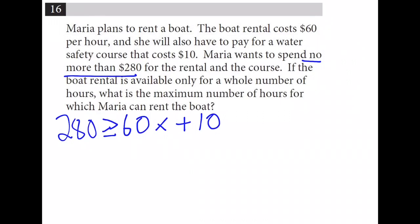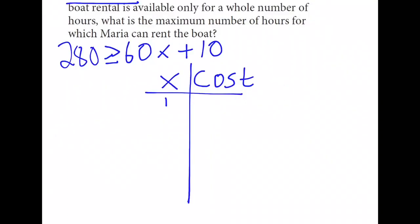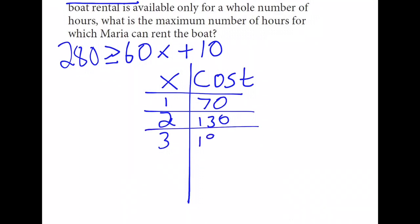So we can only use whole numbers. Let's create a table. If we rent this boat for 1 hour, we would take 60 times 1 plus 10 and get $70. Still works at less than $280. If we rent it for 2 hours, we would get $130. For 3 hours, $190. For 4 hours, $250.